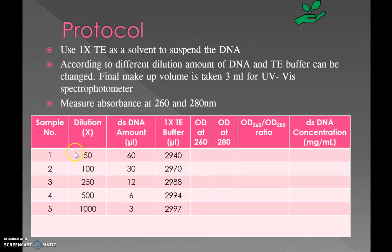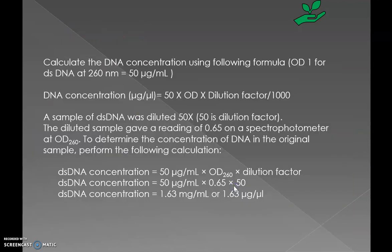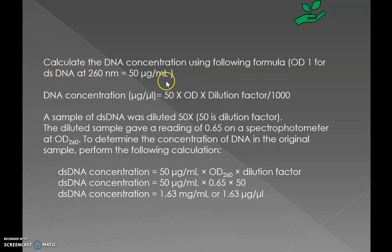According to the dilution factor, we use the corresponding amount of double-stranded DNA and 1x TE buffer, then take OD260 and OD280 readings. The ratio can be calculated to check the purity. To find the current concentration of DNA in our sample, this formula can be applied: 50 × OD × dilution factor / 1000, if we want to calculate the DNA concentration in microgram per microliter. Here, 50 corresponds to 1 OD for double-stranded DNA, representing 50 microgram of DNA per 1 ml sample.